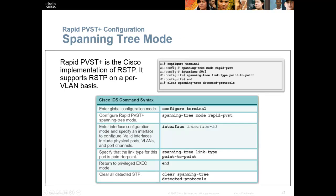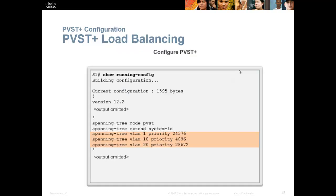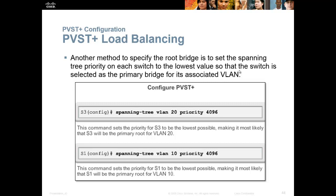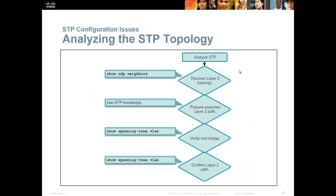The key configuration commands: in global mode, 'spanning-tree mode rapid-pvst' to enable rapid per-VLAN spanning tree. You can set interface link type with 'spanning-tree link-type point-to-point'. The two biggest commands to remember are the spanning-tree mode command and using the primary/secondary mode to set your own root bridge. Alternatively you can set the priority directly. 'Show spanning-tree' and 'show spanning-tree vlan' are your main verification commands.